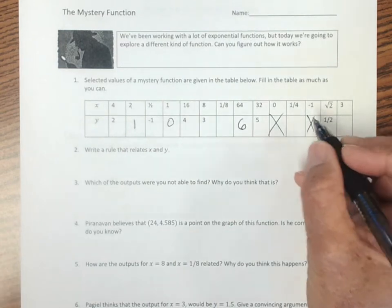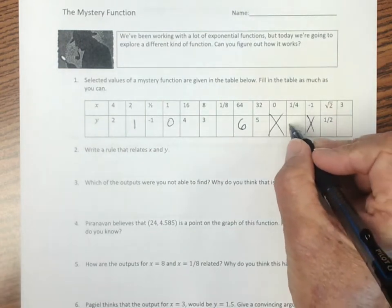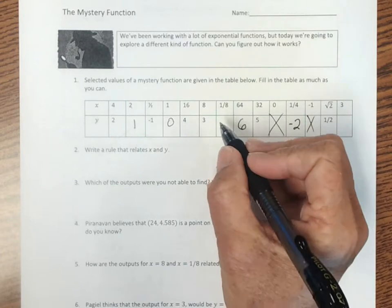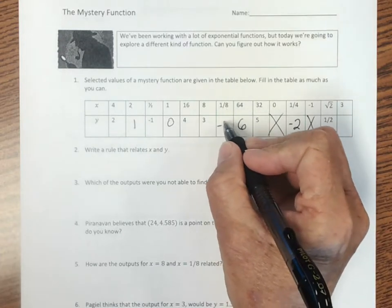For 3, we're not sure. 1 fourth, this value is actually a negative 2, and 1 eighth is a negative 3.